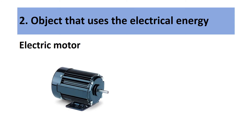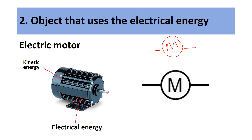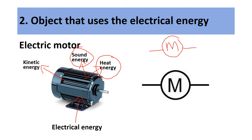Our next electrical component is an electric motor. To draw this symbol, you draw a circle with an M in the center, and two wires connecting on either side. When the motor is running, electrical energy enters and is transformed into kinetic energy. Some of it will also be transformed into heat energy and some into sound energy — both of these would be wasted energy.